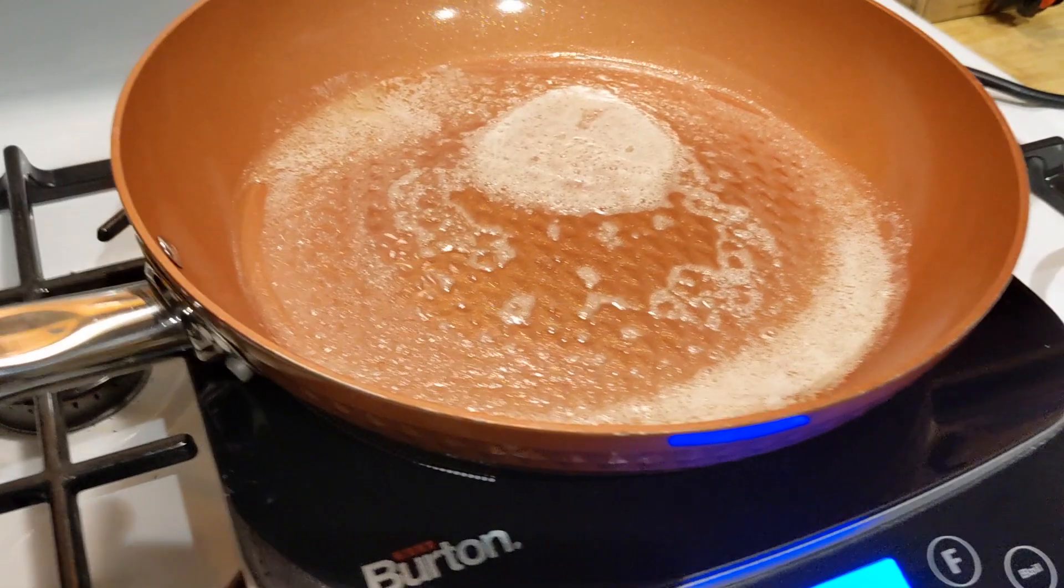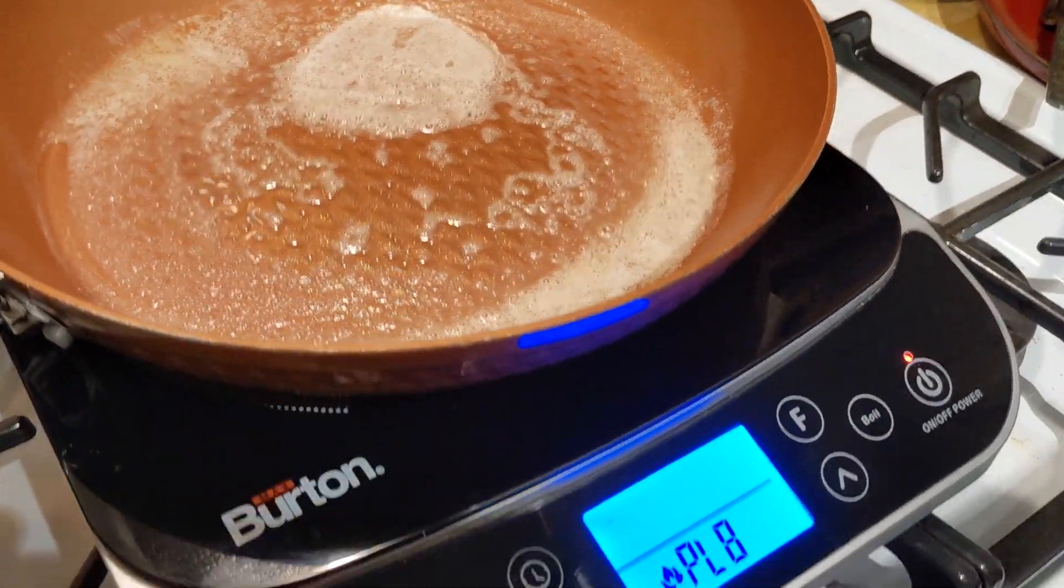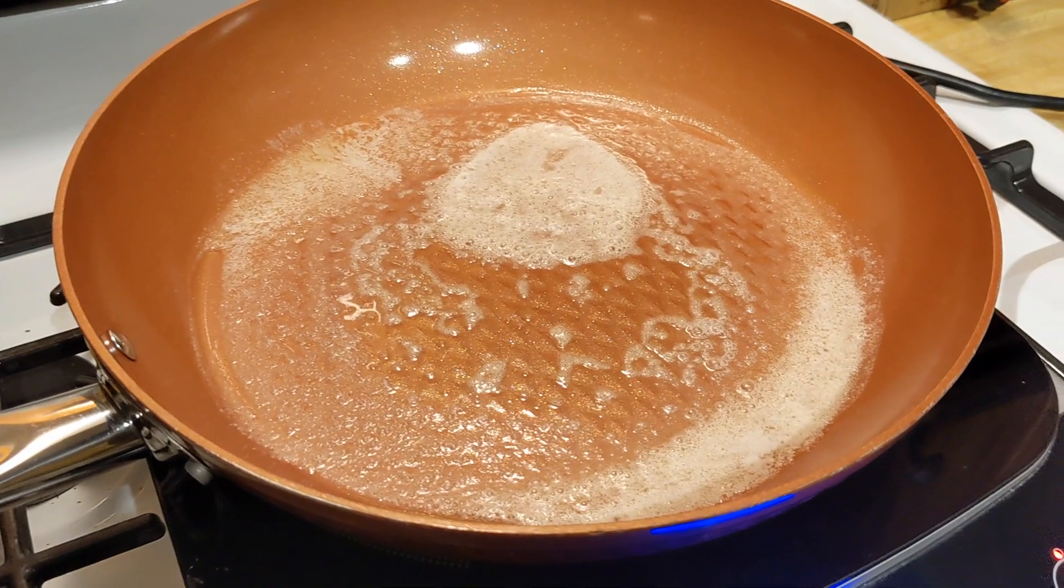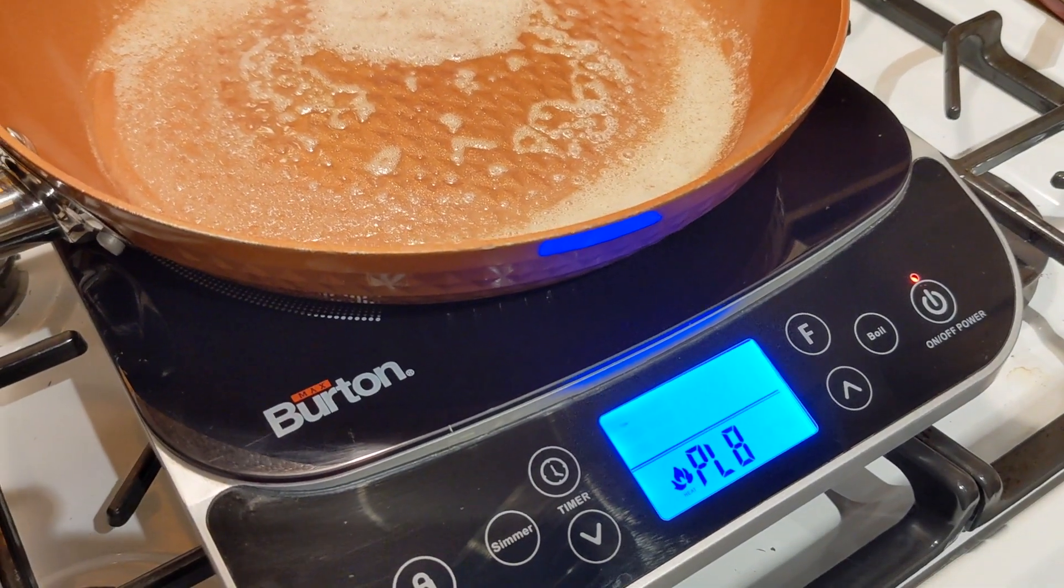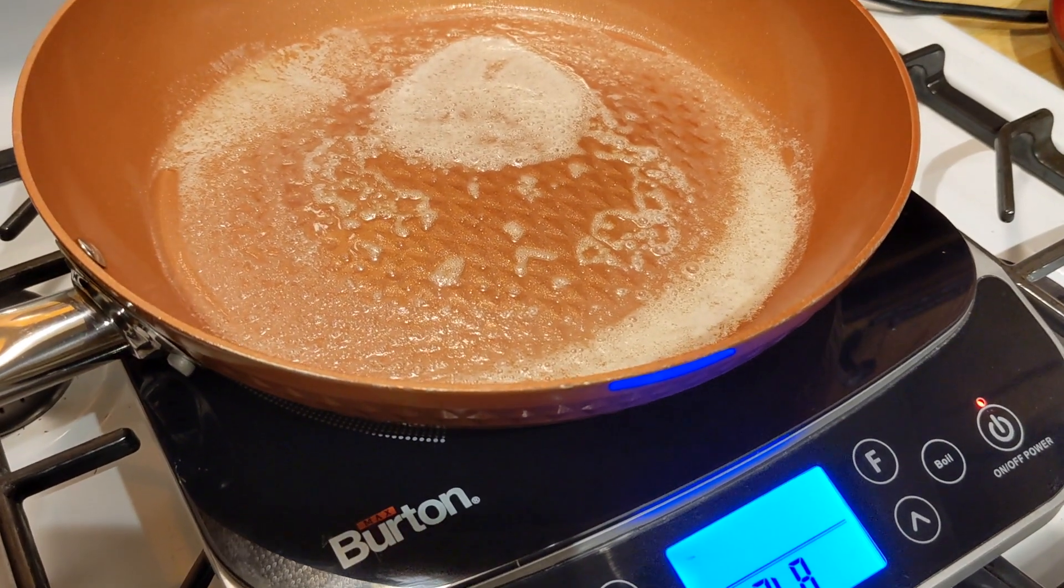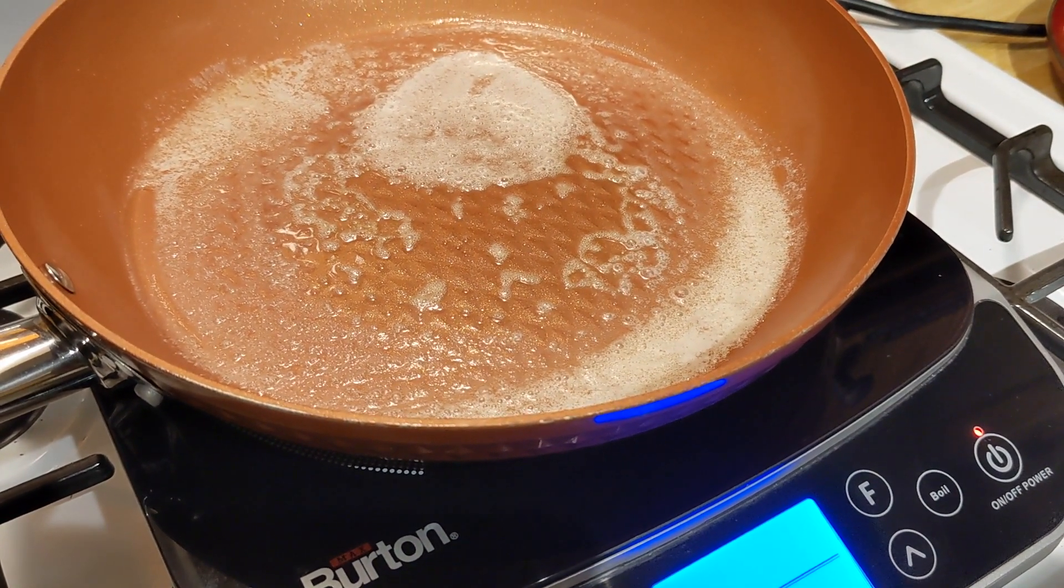Just really handy if you want to simmer something, a soup or some kind of broth or anything, and you just want it to simmer at a low temperature. You can set that and it'll just regulate right there. It just works really well. Give that a couple seconds. I'm going to put the camera down, grab the steak, and throw it on there.